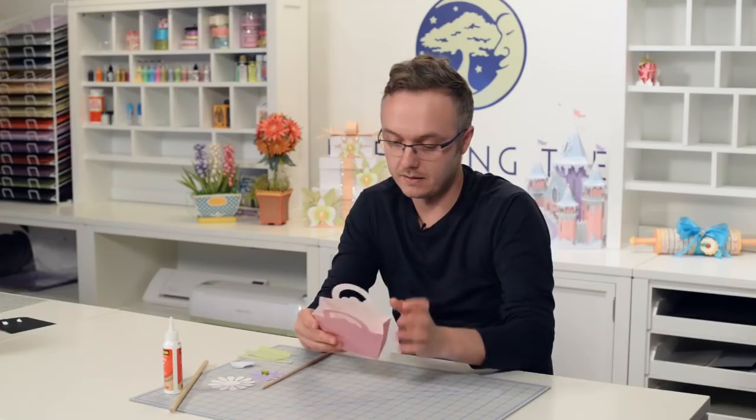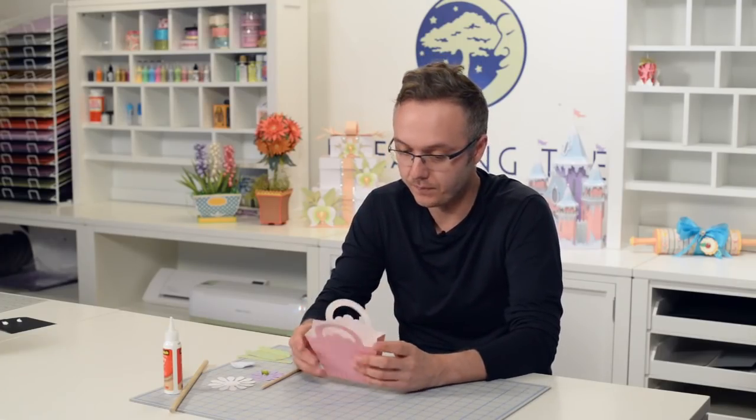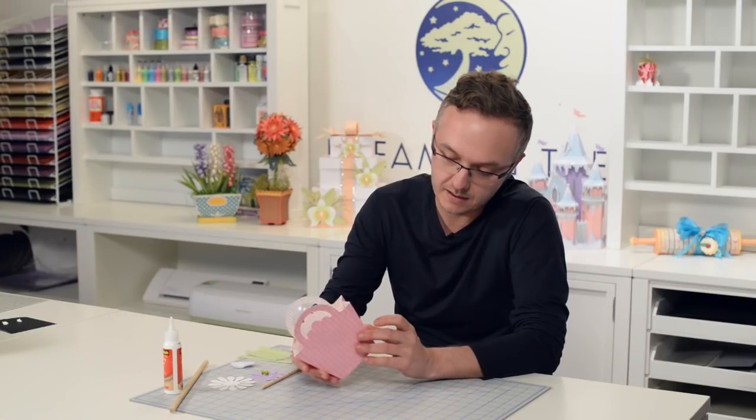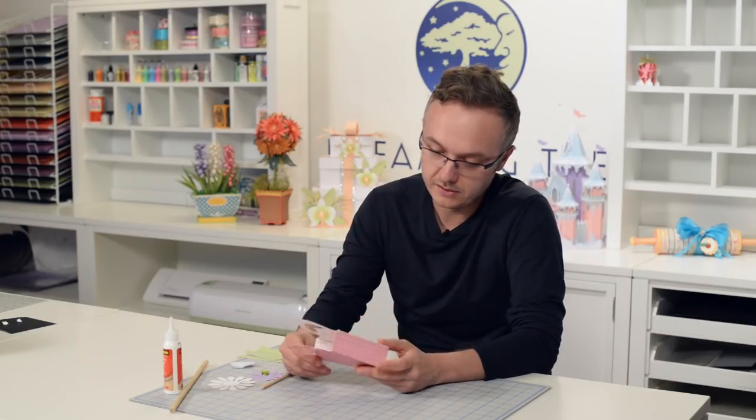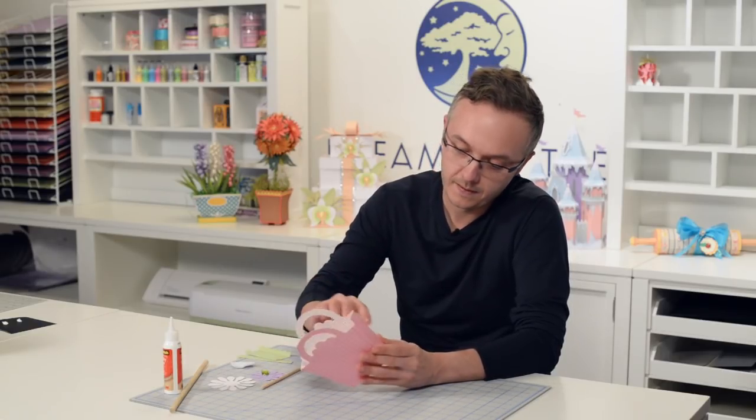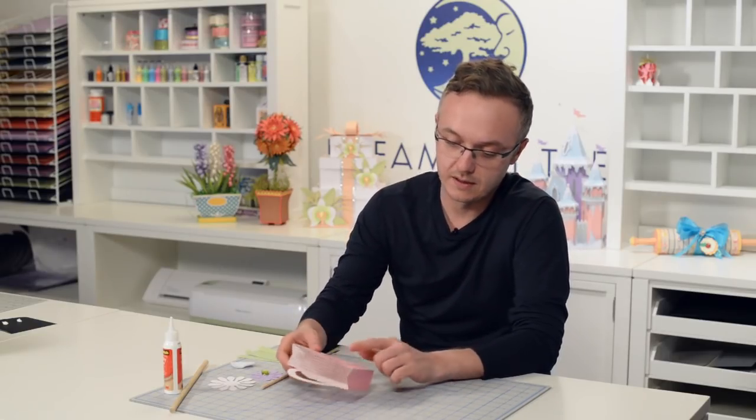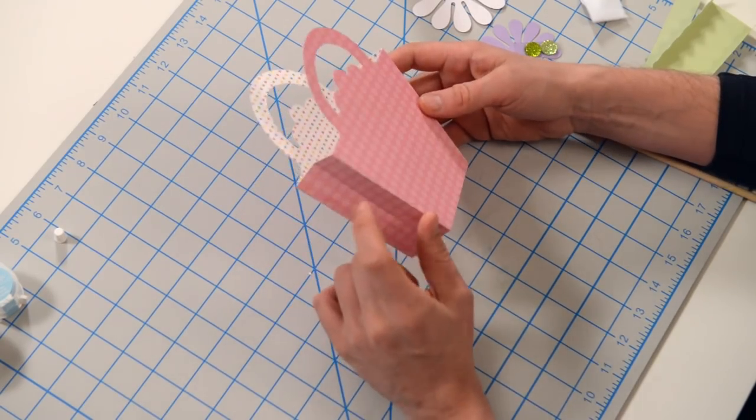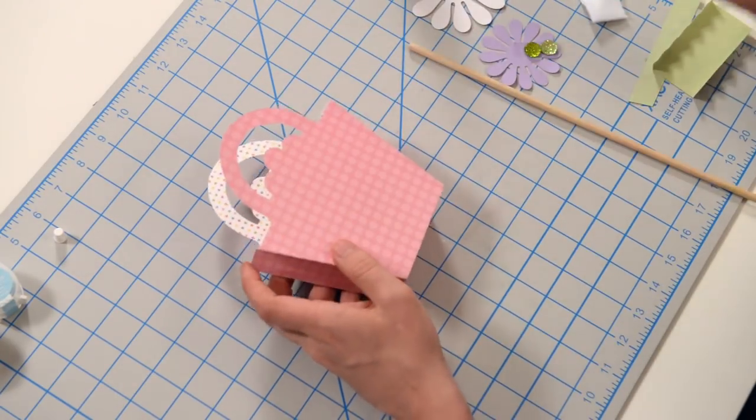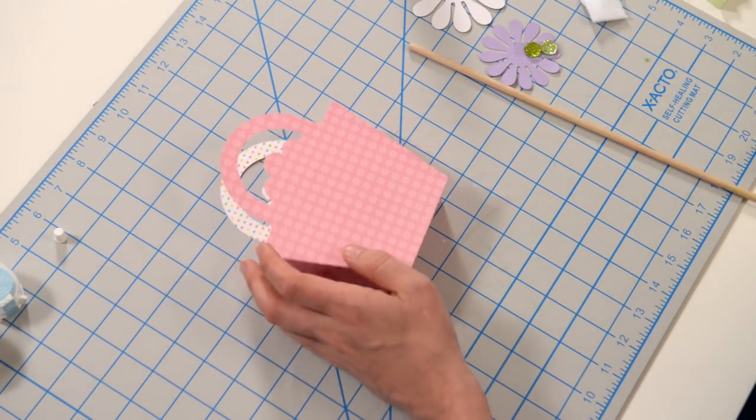Now, depending on the pattern paper that you're using, mine is double sided and it is kind of a white core, but I'm not really, it's not really displaying too much of the white. And because of this lighter pattern, this white kind of looks okay over here. If you want to, you can hit the edges with a little bit of ink. I don't think it's necessary.